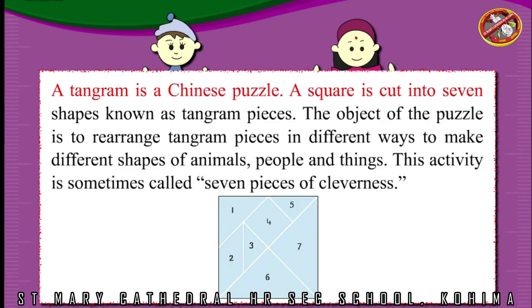A tangram is a Chinese puzzle. A square is cut into seven shapes known as tangram pieces. The object of the puzzle is to rearrange tangram pieces in different ways to make different shapes of animals, people, and things. This activity is sometimes called seven pieces of cleverness.